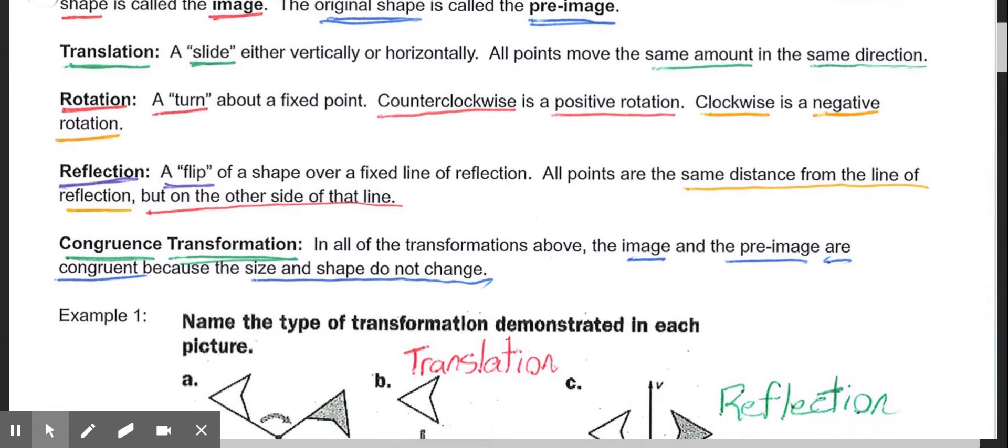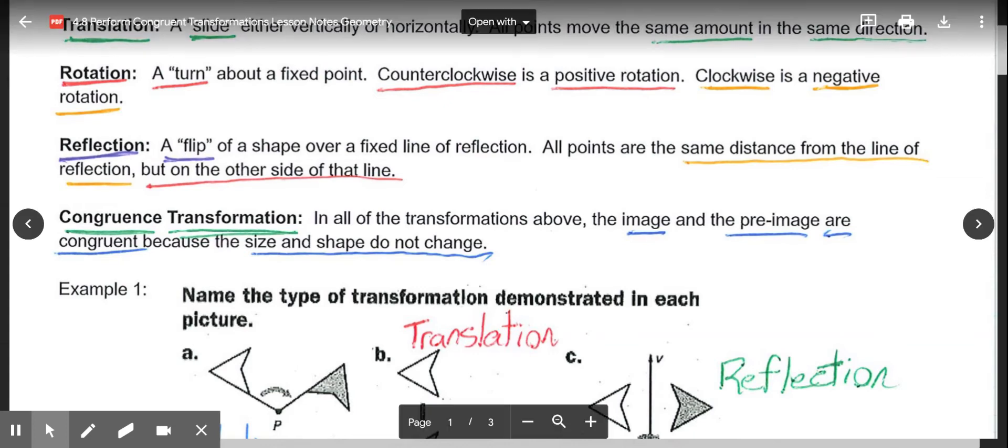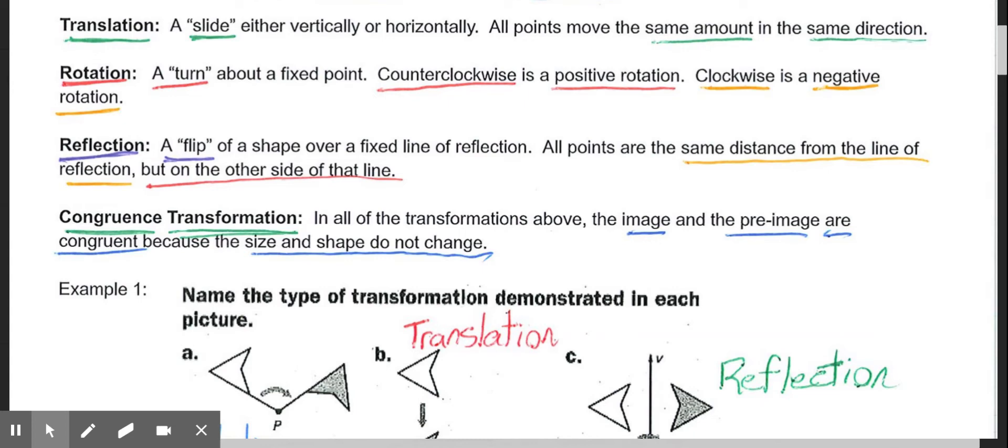Then we get to put the two ideas together and look at congruence transformations. In all the transformations above - a translation, a rotation, or a reflection - the image and the preimage are still congruent because the overall size and shape do not change. So translations, rotations, and reflections are all three types of congruence transformations.